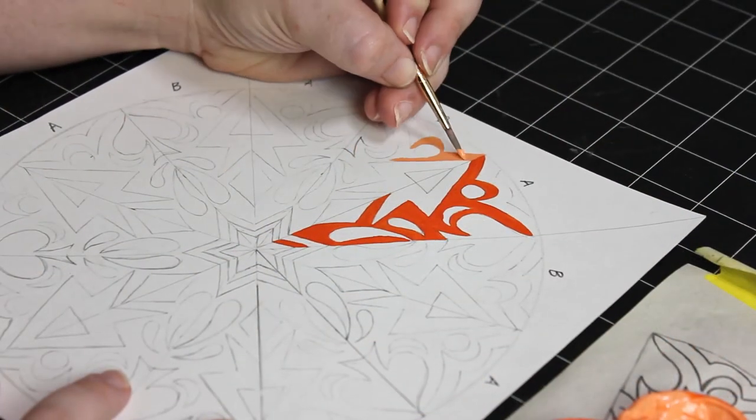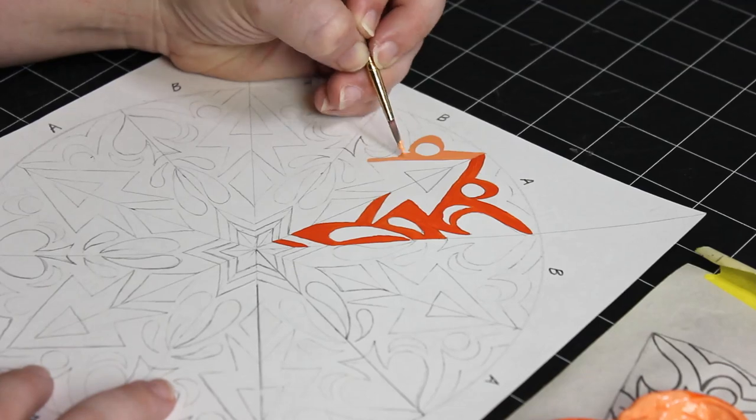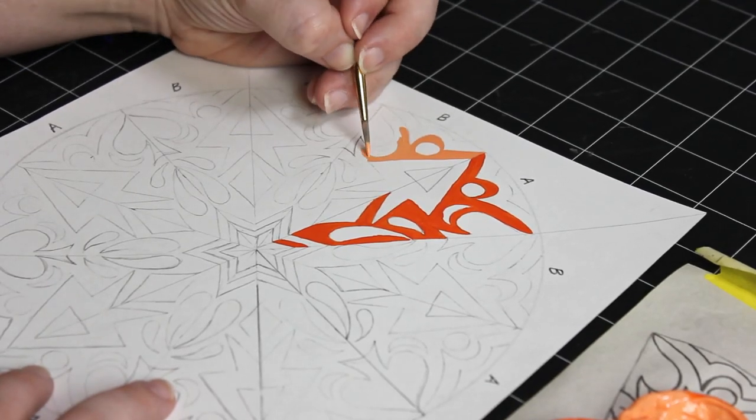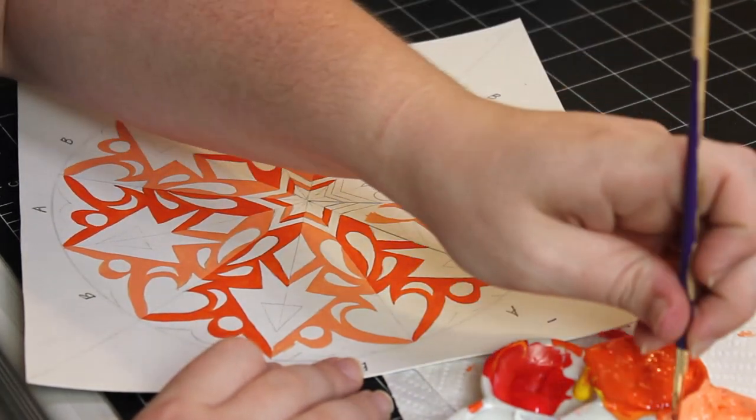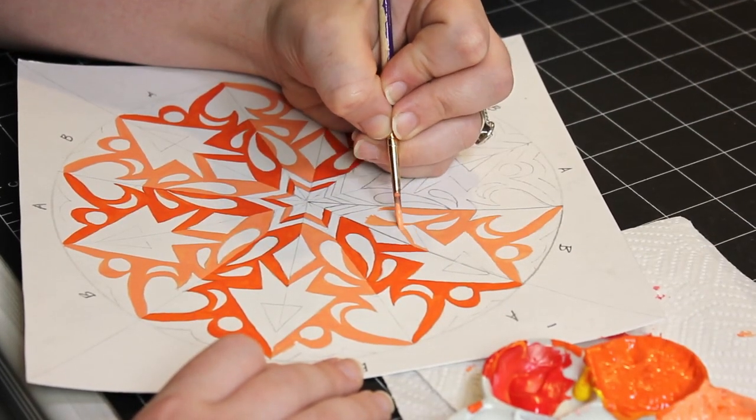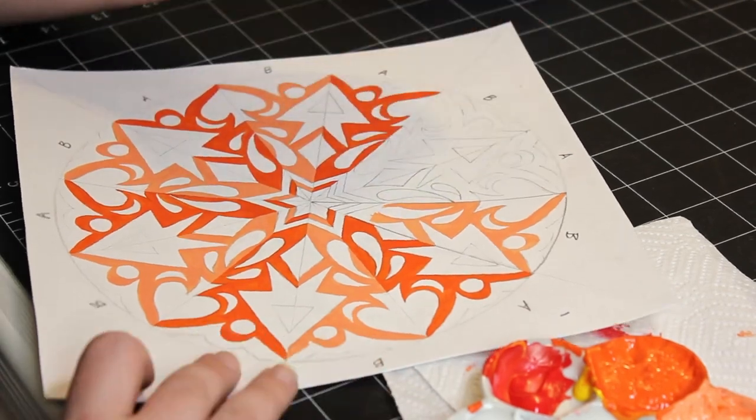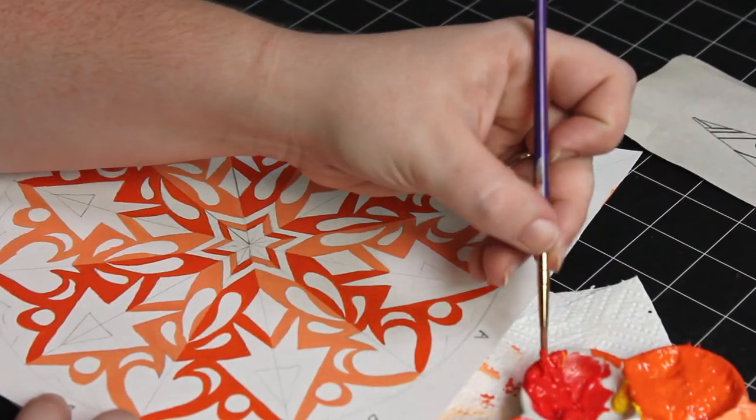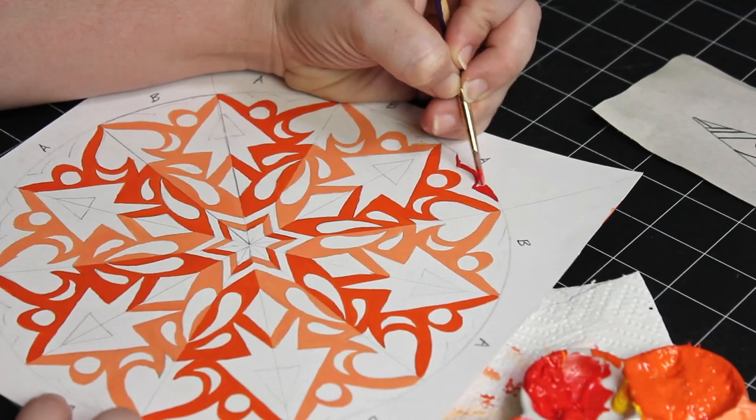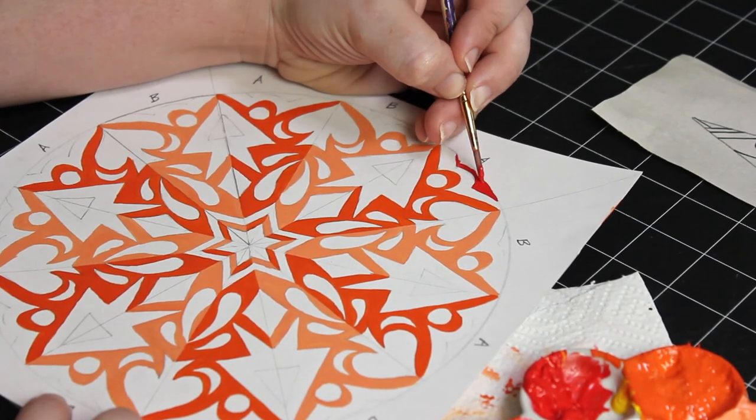Remembering to alternate your colors and tints according to A and B slices. Please use your detail brushes provided in supply kit to help you paint around your edges and the smaller shapes neatly.